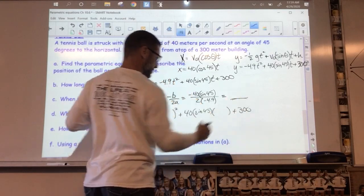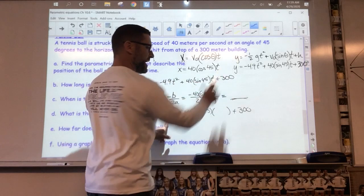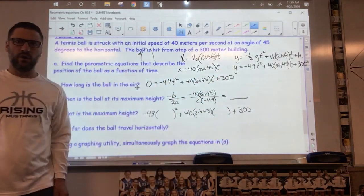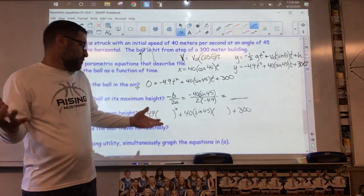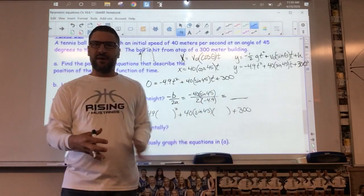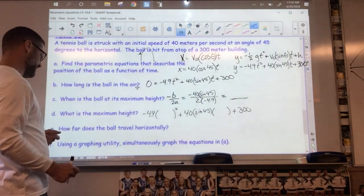So whatever you get there, you plug it into that y equation. Your y equation is how high—you plug it into those two spots. And you figure out it was at the max height at this time, and here's the maximum height it would have done. So you plug that in.